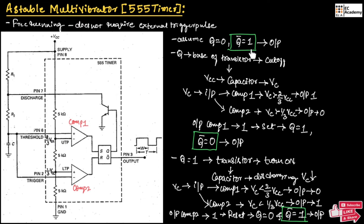The output will move to 1, then 0, then again to 1. So we can say an astable multivibrator is a free-running multivibrator which does not require any trigger pulse to produce the output. Once the power supply is applied, it will produce an output having both high state and low state.